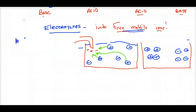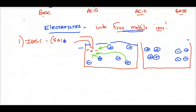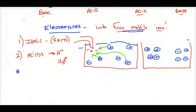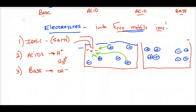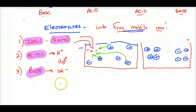Electrolytes are: (1) ionic compounds (salts — metal bonded to a nonmetal/negative ion), (2) acids, which dissociate into protons or produce H₃O⁺, and (3) bases, which dissociate into hydroxides or produce hydroxides indirectly. The better conductors have higher concentrations of ions. A 6 M solution of a strong base conducts better than a 4 M solution.